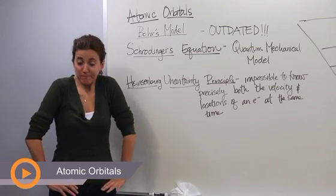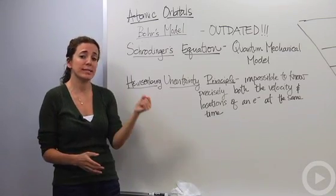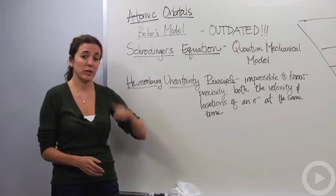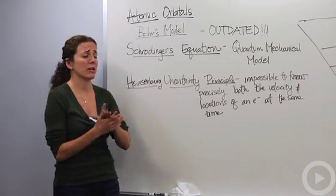Alright, so let's talk about the atomic orbitals. We originally had the idea that an atom looks like a nucleus in the middle, a positively charged nucleus with the electrons orbiting around it. We're not going to use that model anymore, it's extremely outdated, we're going to ignore it.